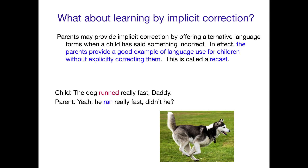It turns out that parents may provide implicit correction, and the way they do this is by offering alternative language forms when a child has said something incorrect. In effect, the parent is providing a good example of language use for children without explicitly correcting them, and this is called a recast.